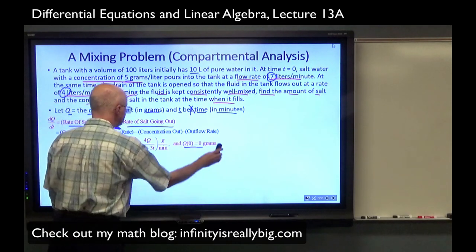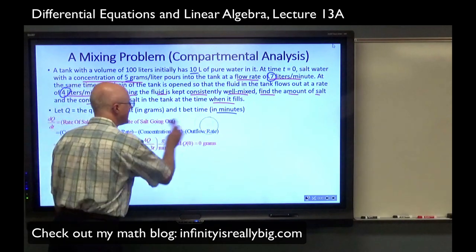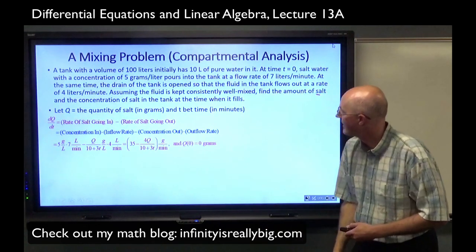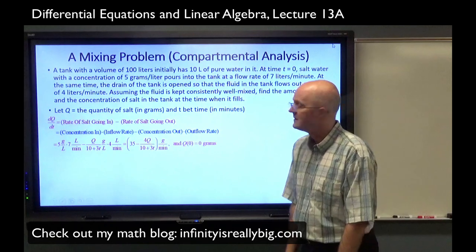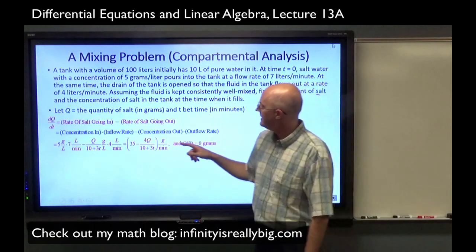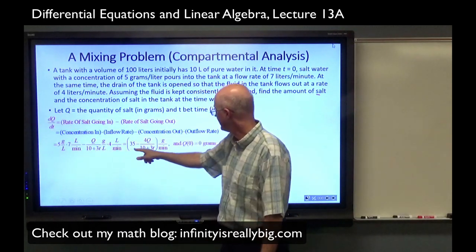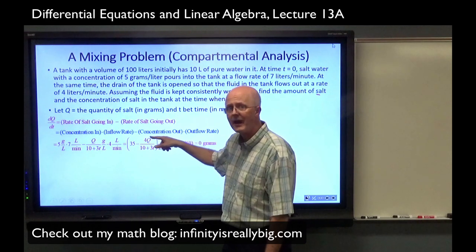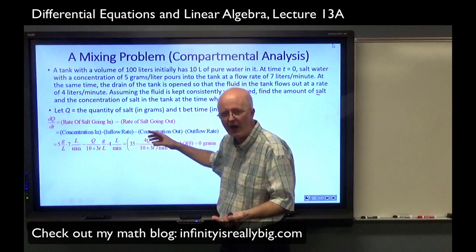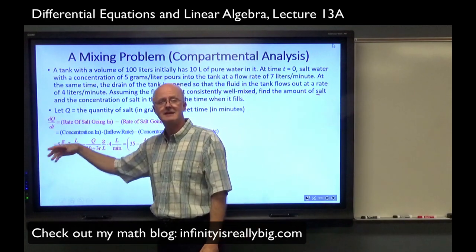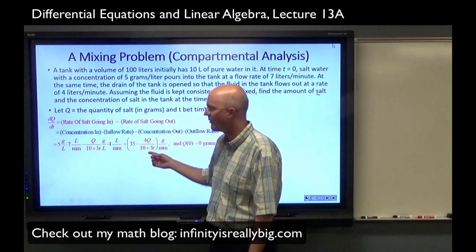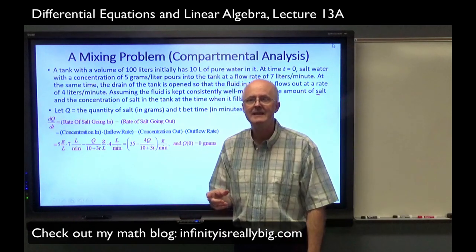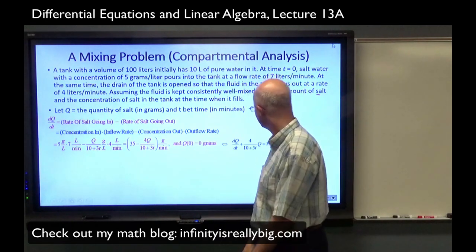Now I'll show you all the details. I'm going to use the method of integrating factors. First, I have to figure out what the integrating factor is. Take this linear differential equation: dq/dt = 35 − 4q/(10 + 3t). That is linear in q. To use the method of integrating factors, the term involving the dependent variable — this time q — needs to get moved to the other side in linear operator form. Add 4q/(10 + 3t) to both sides. The coefficient in front of q, which is 4/(10 + 3t), is what I call g(t). The integrating factor μ(t) is e to the integral of that.